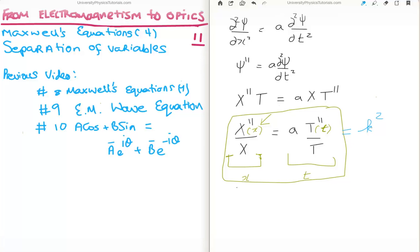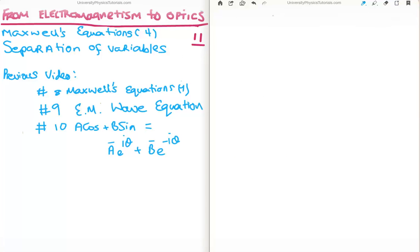And I'm going to call the constant k squared just for convenience. And the more you'll get used to solving equations by separation of variables, you'll understand why we call it k squared. So let's rewrite this equation. What we're going to get is capital X double prime over X is equal to A times capital T double prime over T is equal to a constant k squared.